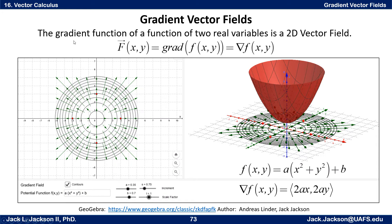So here's an example. The gradient function of a function of two real variables is a 2D vector field. Here we started with the potential function f(x,y) = a(x² + y²) + b, for a and b given by some sliders. In this particular case, a is set at 0.35, b is set at 0.7.